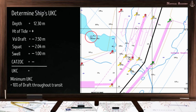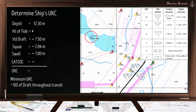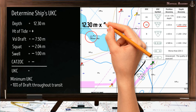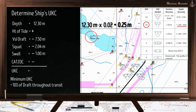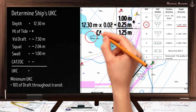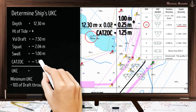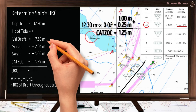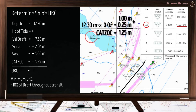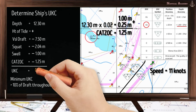For our chart where the ship passes a 12.3 meters depth sounding, let us assume the zone of confidence is category A2. To calculate depth accuracy: 2% of 12.3 meters = 12.3 × 0.02 = 0.25 meter; add 1.0 meter, giving accuracy of 1.25 meters. This is the CATSOC value to subtract from the depth. Subtracting the vessel's draft (7.50 m), squat (2.04 m), swell (1.00 m), and CATSOC (1.25 m) from the depth (12.3 m), the ship's UKC when passing 12.3 meters depth at 11 knots is 0.51 meter.